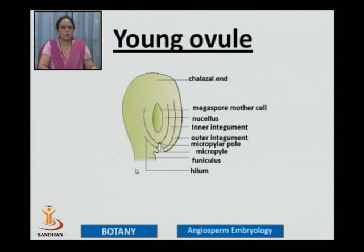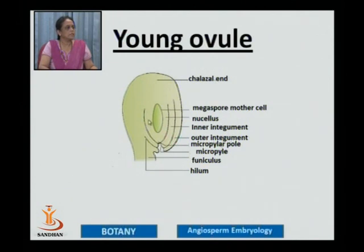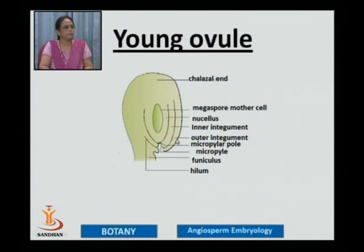A very young ovule has a stalk which is known as the funiculus — you can see this stalk by means of which it stands on the placenta — and then the central body, the main body of the ovule, is known as the nucellus. The nucellus is completely surrounded by two layers known as integuments: the outer integument and the inner integument.